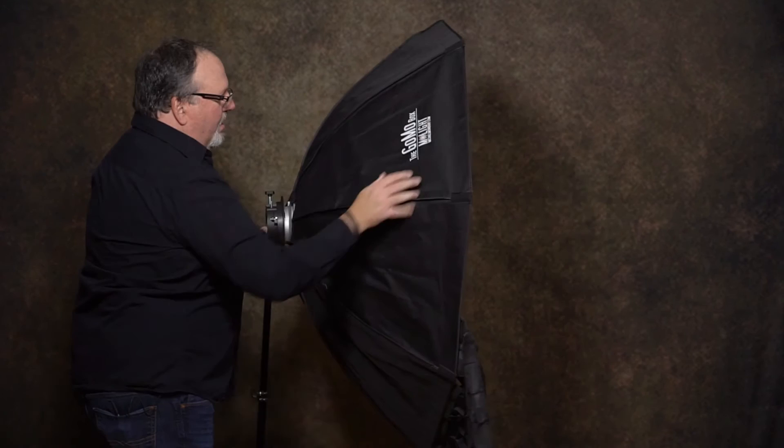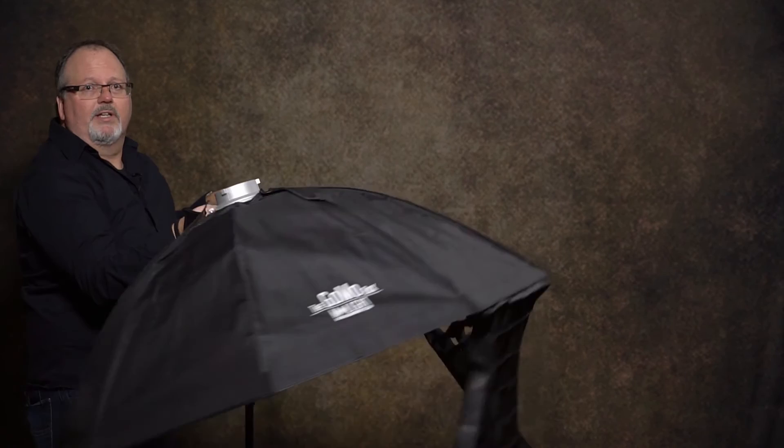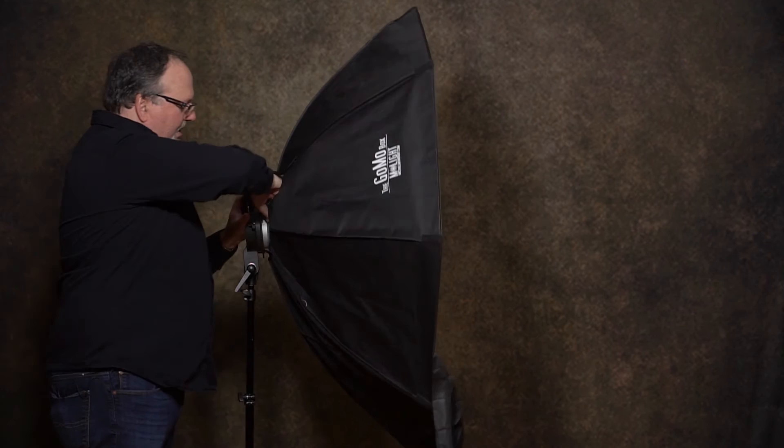All my GoMo boxes come with a Bowens S mount. Very easy to release. You just release it here, twist, turn, done. Set it back up, line up, click, boom, done. It's just that easy.